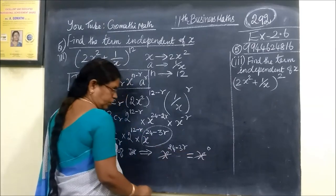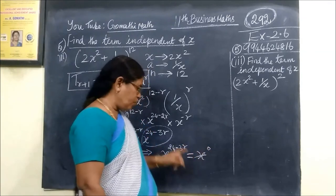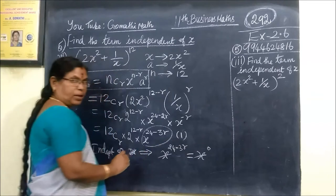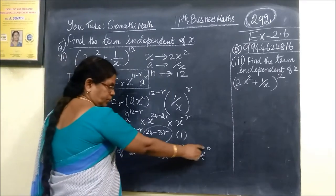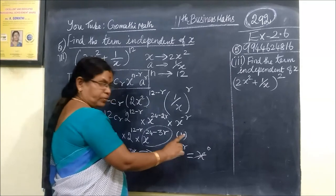This is the case for x power 0. Why we are writing x power 0? Because x power 0 is 1. In that term, the coefficient is constant, that is independent of x. The power must equal 0.